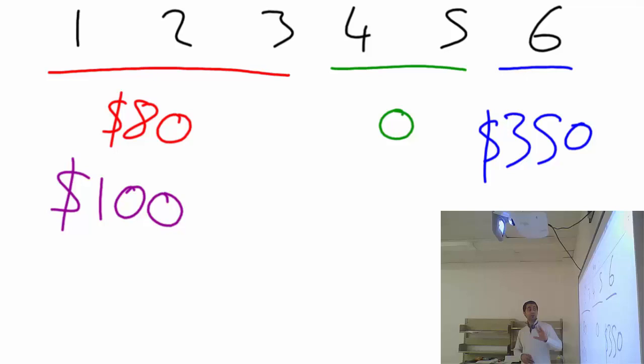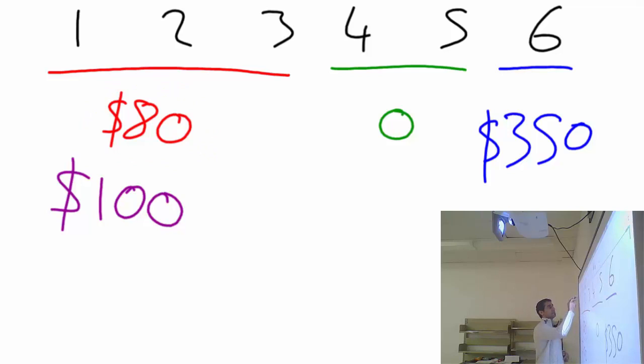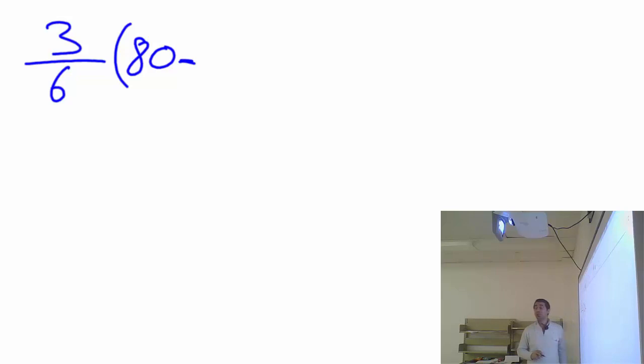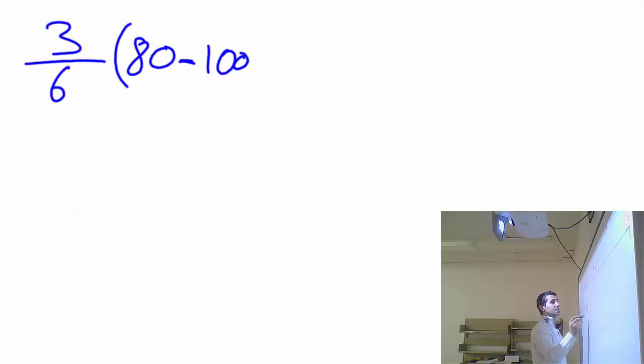The first option: if you get one, two, or three, you will get eighty dollars. In mathematical expectation form, getting one, two, or three means three options out of six. So we write three-sixths, open bracket, and write the money we will win — eighty — minus the money we will lose, which is the bet money: one hundred. That stays at one hundred. Then plus the next probability.